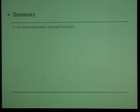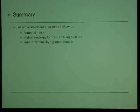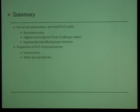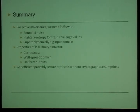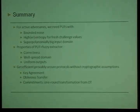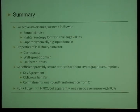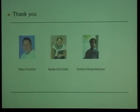To summarize: we provided a definition for Physically Unclonable Functions — bounded noise, high entropy for fresh inputs, and super-polynomial input domain — placed a fuzzy extractor on top to obtain correctness, well-spread domain, and uniform output properties. We obtained several efficient provably secure schemes without cryptographic assumptions, relying only on a good PUF: key agreement, oblivious transfer, and commitments. Along the way we found a one-round transformation from oblivious transfer to commitments. PUFs plus fuzzy extractors are like non-programmable random oracles, but apparently you can do even more with PUFs.